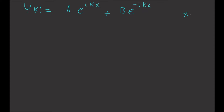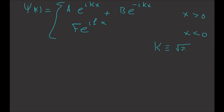This solution applies for X greater than zero. For X less than zero, we have psi(X) = F·e^(iLX). Here, K is defined as the square root of 2ME divided by H-bar, and L is defined as the square root of 2M(E + V0) divided by H-bar.